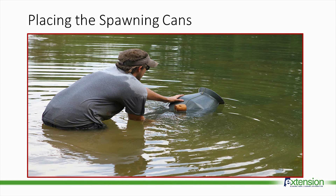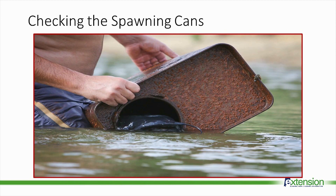Catfish like to spawn in sheltered locations, so many farmers will put out spawning cans in two to four feet of water. The male catfish will find and prepare the can for spawning and try to attract a female. After several days, the farmers will check the spawning cans by slowly raising them out of the water. They will often find the male fish still in the can caring for the eggs.